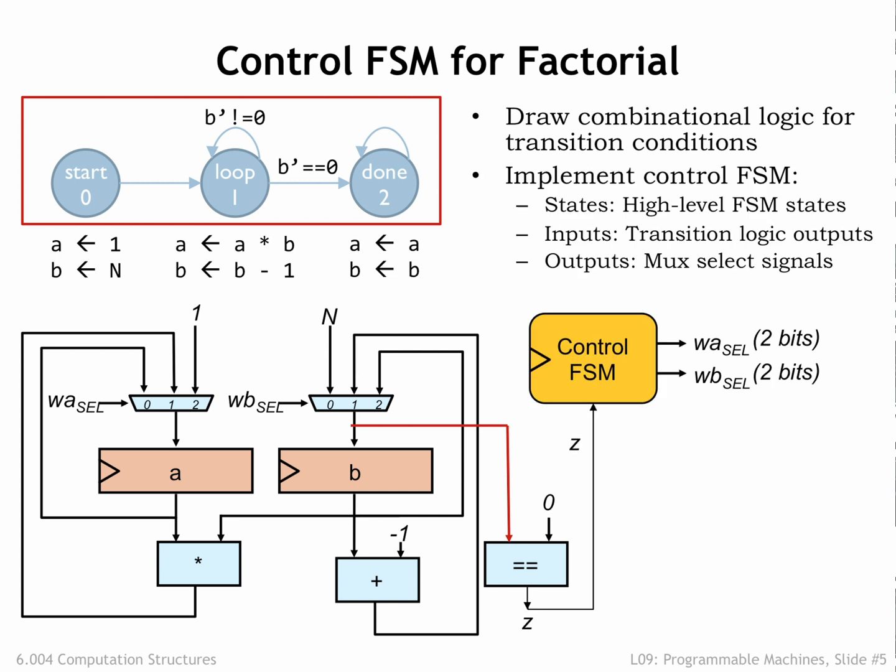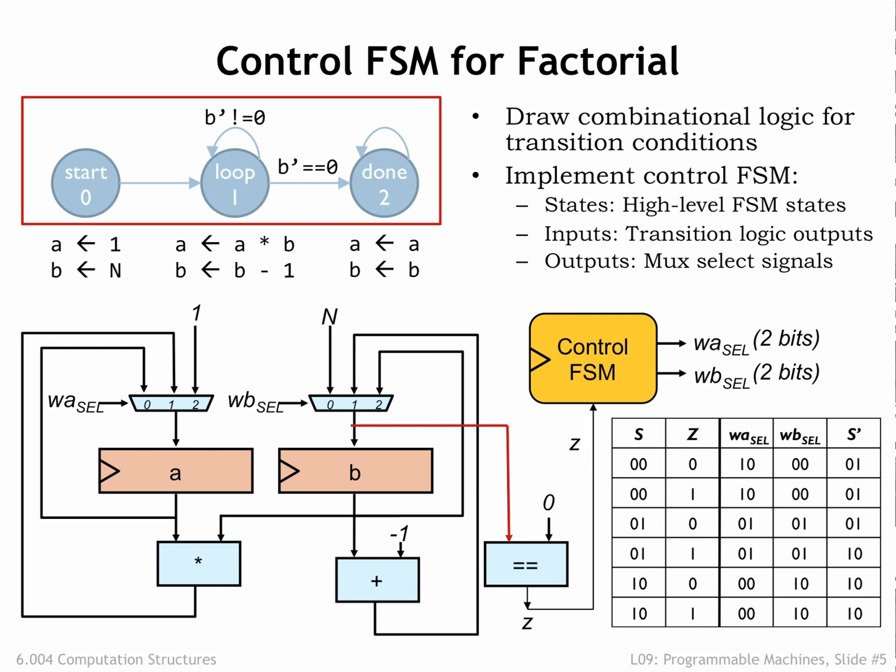Now we're all set to add the hardware for the control FSM, which has one input z from the data path and generates two 2-bit outputs to control the data path. Here's the truth table for the FSM's combinational logic. S is the current state encoded as a 2-bit value, and S' is the next state.